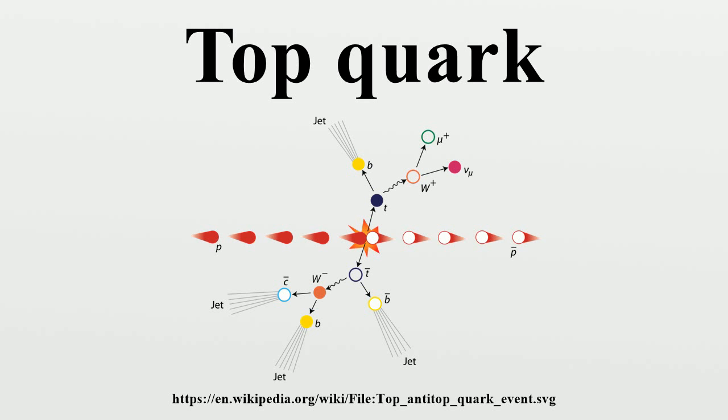It was known that this quark would be heavier than the bottom, requiring more energy to create in particle collisions. But the general expectation was that the sixth quark would soon be found. However, it took another 18 years before the existence of the top was confirmed.